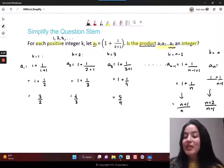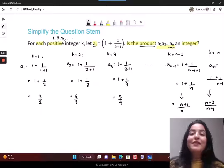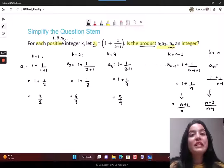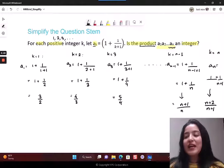Finally, for the last one, k equal to n, you just have 1 plus 1 upon n plus 1. That's n plus 2 upon n plus 1. I have just written what a1 is, a2 is, all the way till an.